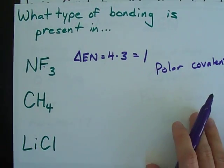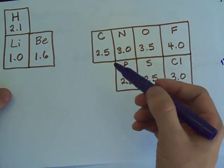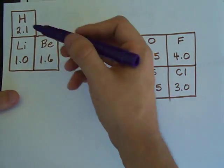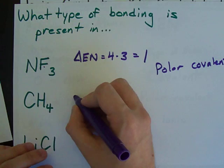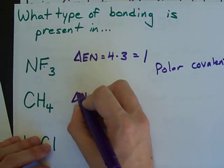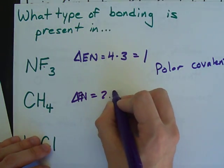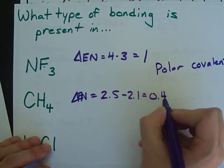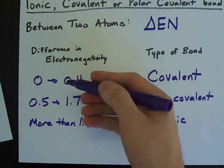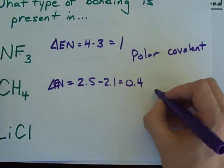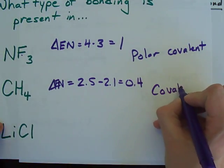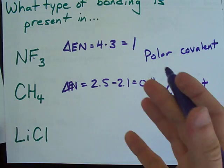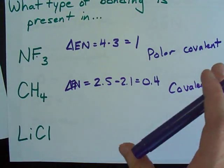What about the type of bonding in CH4? Now C and H are 2.5 and 2.1, so the difference in electronegativity is 2.5 minus 2.1. It turns out to be 0.4. Up to 0.4, we call a covalent bond, which means hydrogen and carbon share their electrons about equally.